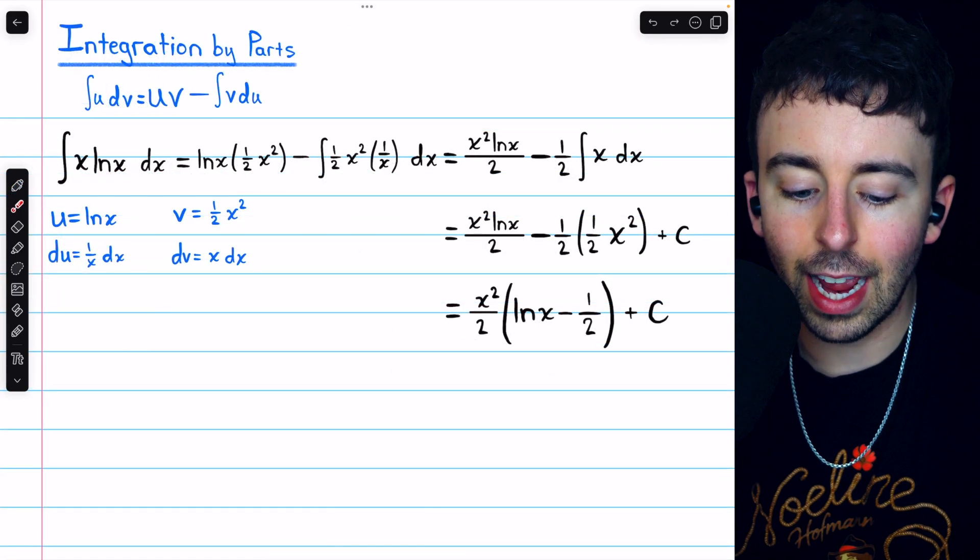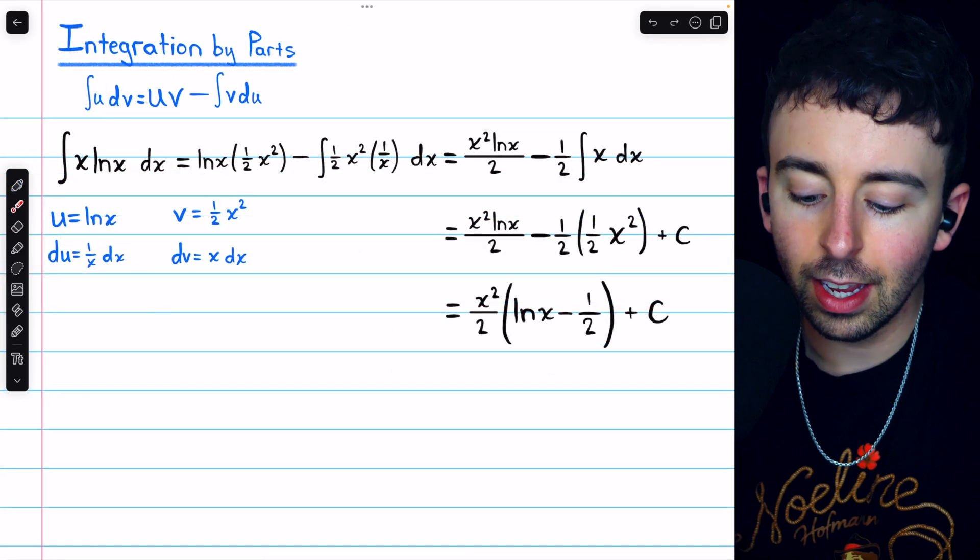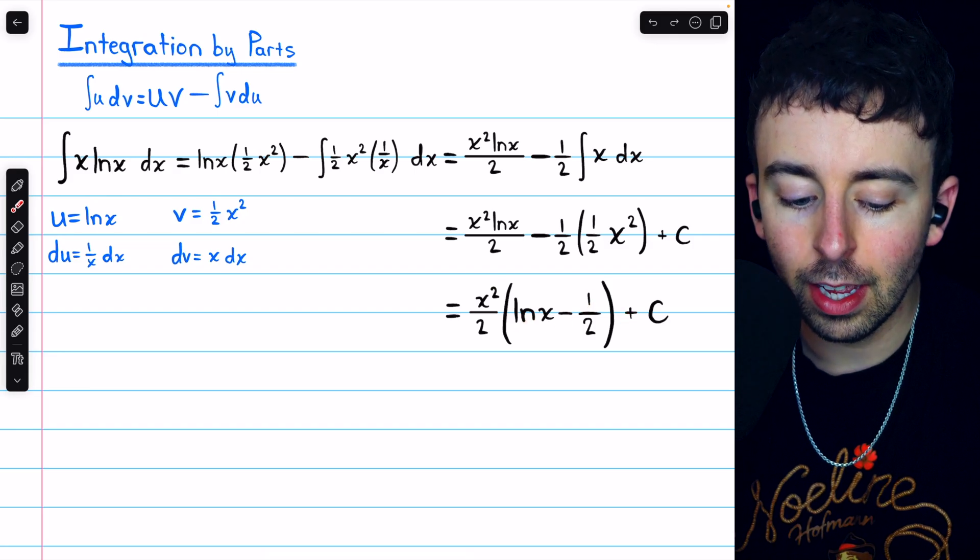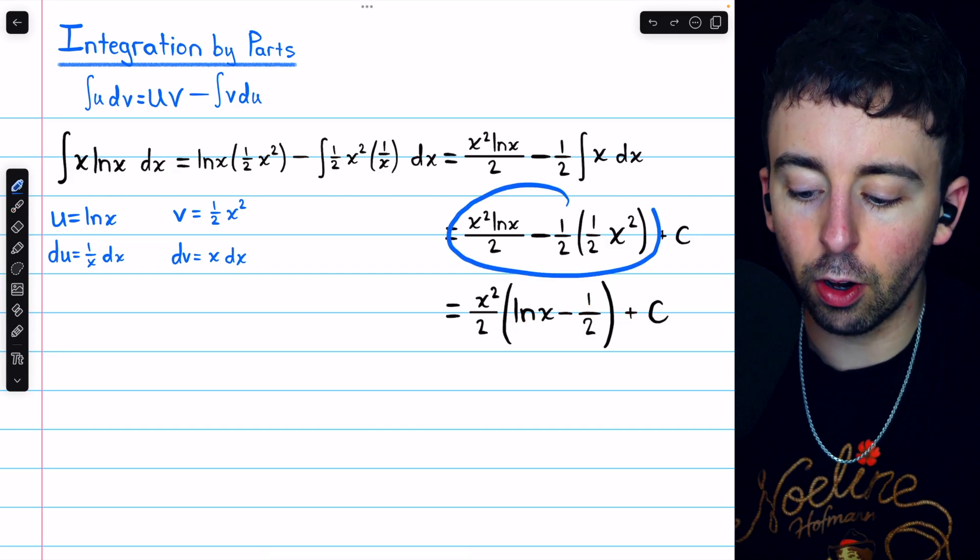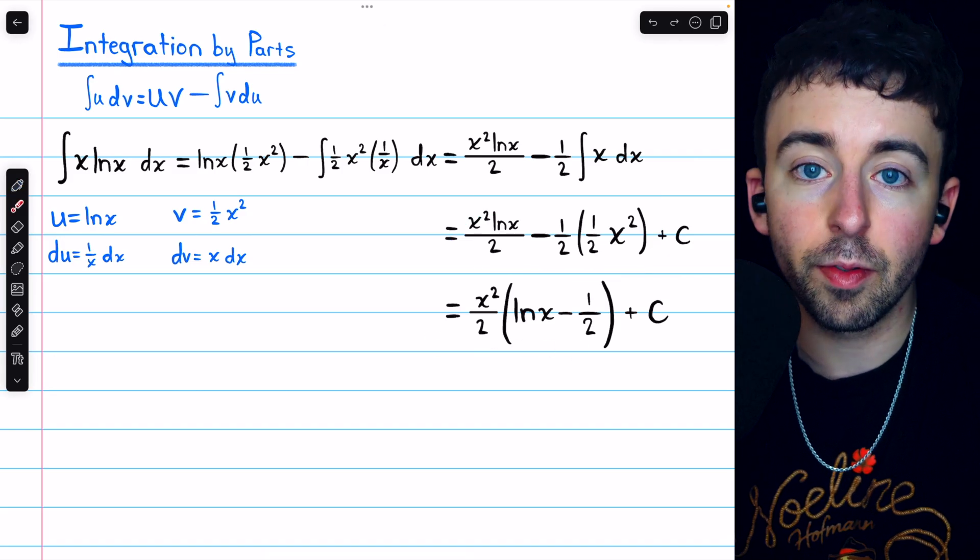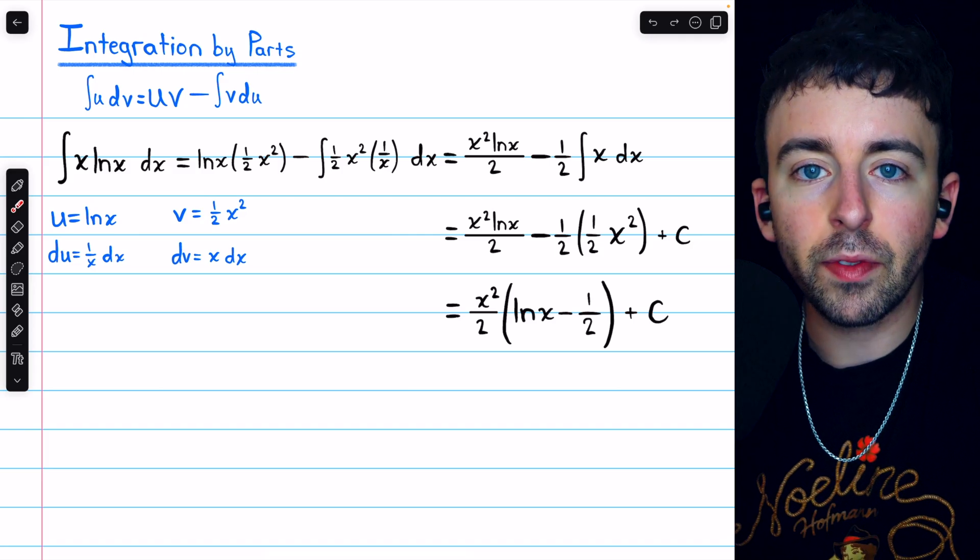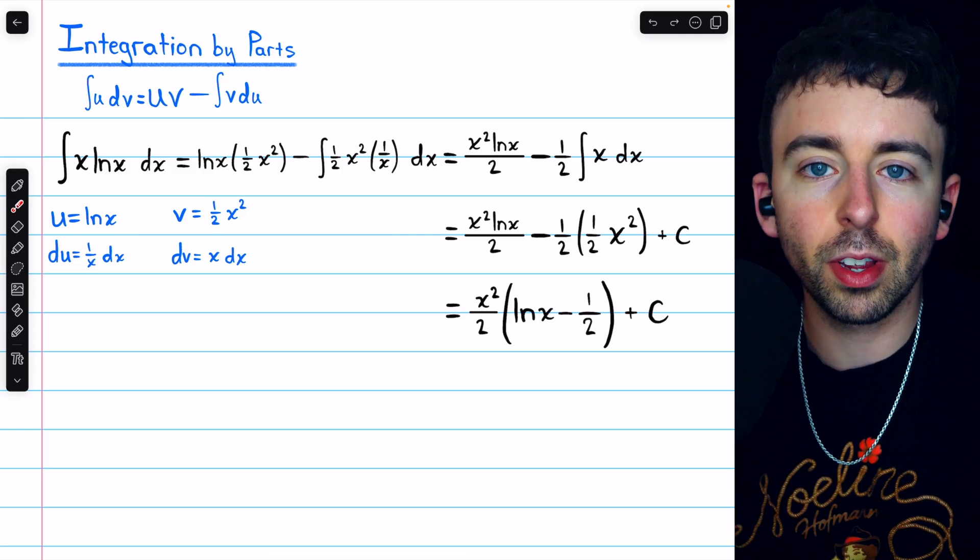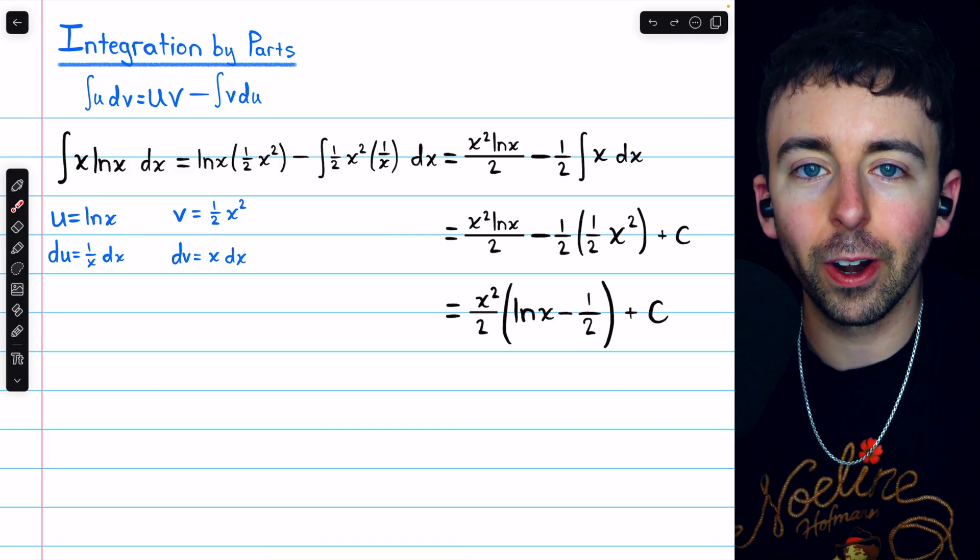And that's it. The integral of x ln(x), using integration by parts, is x squared over 2 times ln(x) minus a half, plus c. If you like, you could have combined these terms into a single fraction, but it's kind of up to personal preference. I like this factored form. Let me know in the comments if you have any questions, and be sure to check out my Calculus 2 course and Calculus 2 exercises playlists in the description for more. Thanks for watching.